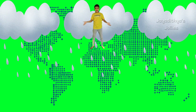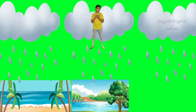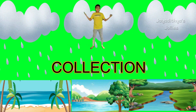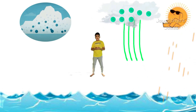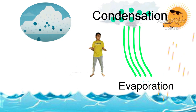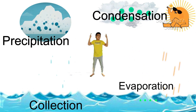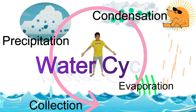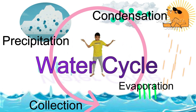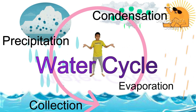In this way, the rain falls onto the Earth and is collected into oceans, lakes, rivers, etc. This process is called collection. The whole process of evaporation, condensation, precipitation, and collection is called the water cycle. Friends, this whole process keeps on repeating.